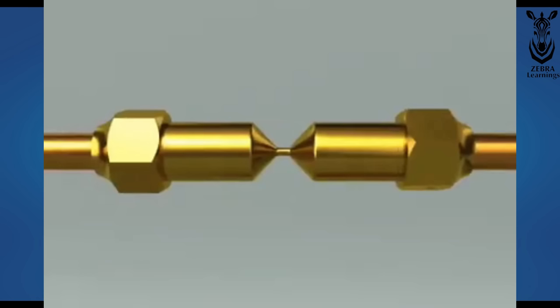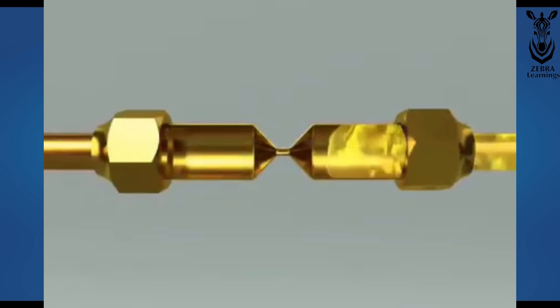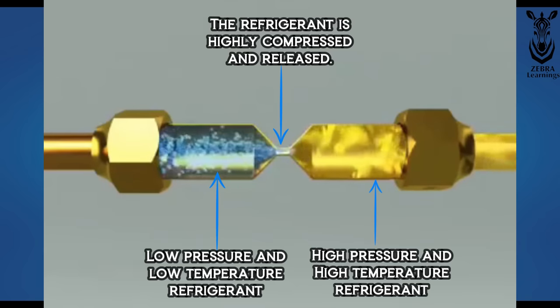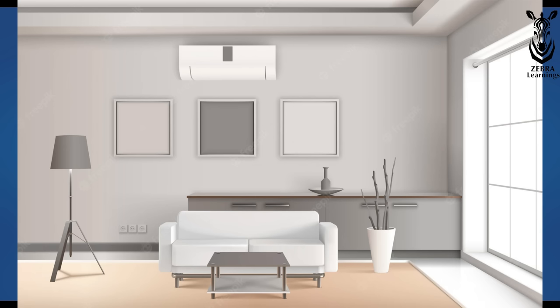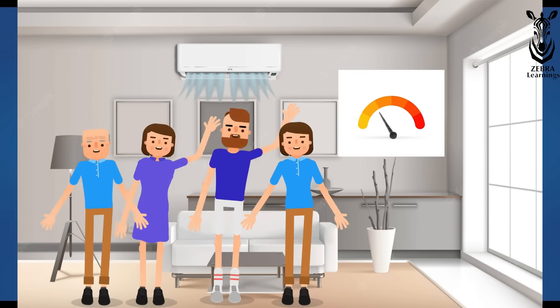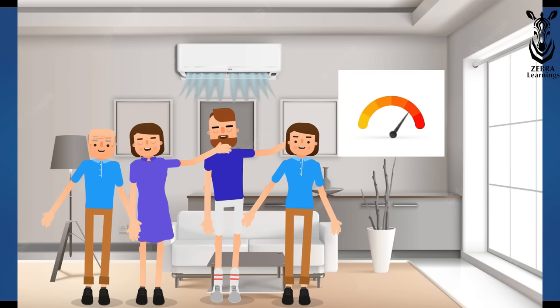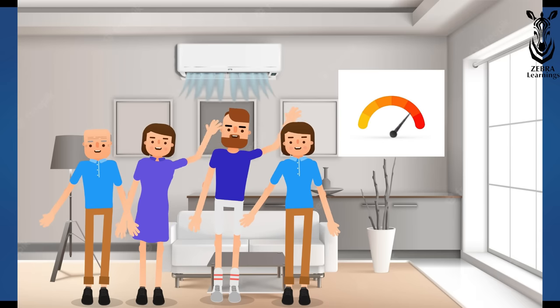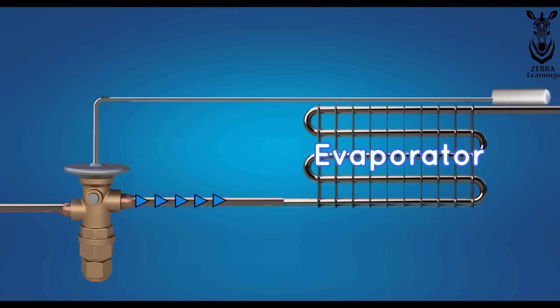Similarly, when we compress and release the refrigerant, the temperature of the refrigerant decreases. When four people enter a room where AC is running, the temperature of that room increases. At that time, the expansion valve sends more refrigerant to the evaporator and cools the room.